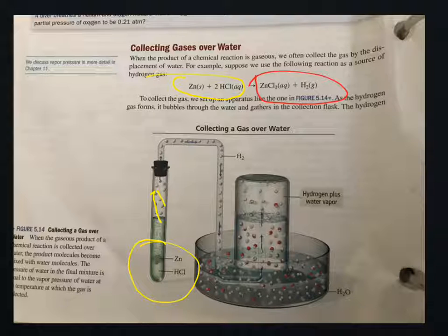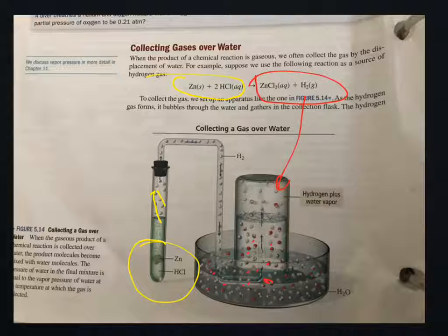The ZnCl2 is aqueous, so it stays inside the tube because aqueous means it remains in the water. But the hydrogen is a gas. Before the experiment, the collection tube is filled with water. When the experiment is done, the hydrogen gas replaces the water. That's why we use this apparatus — to collect hydrogen gas.